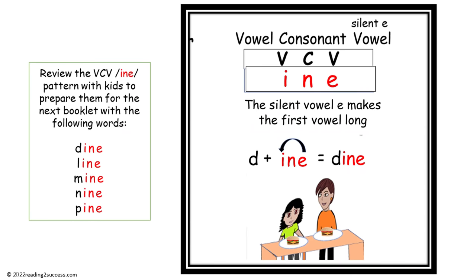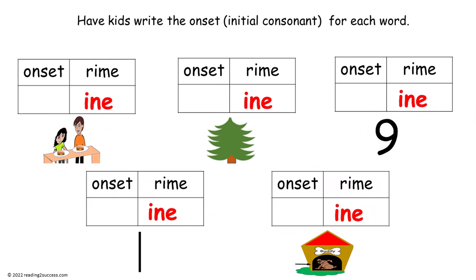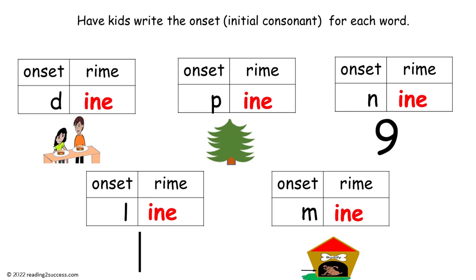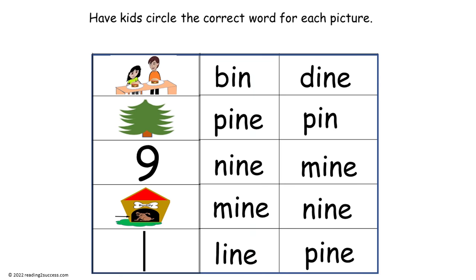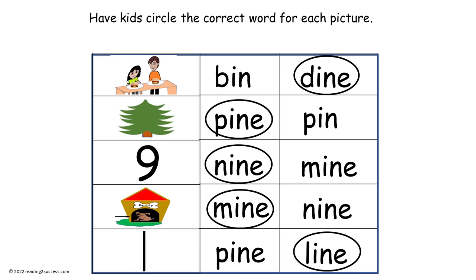This next long I onset rhyme also follows the VCV pattern with the letters I-N-E. The words kids will practice are dine, line, mine, nine, and pine. This is the template for the booklet. Have kids write the onset — the initial consonant — for each word. This is the completed example. Then have kids circle the correct word for each picture, and this is the completed example.